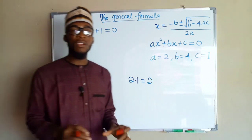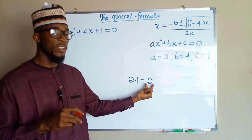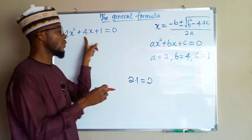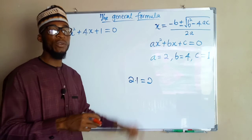And there are not any two numbers which you can multiply together to get 2 and add them together to get 4. Hence, we say this quadratic equation cannot be factorized.